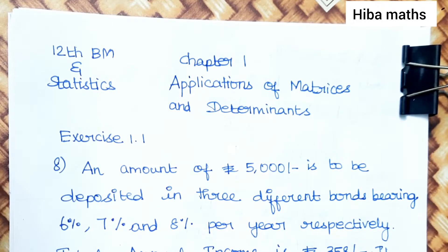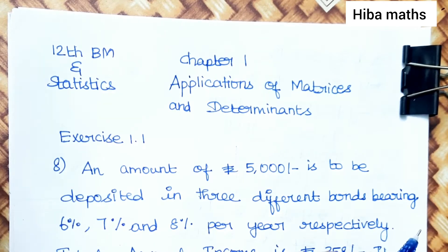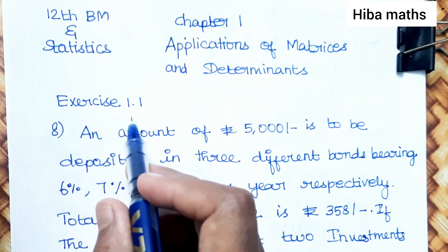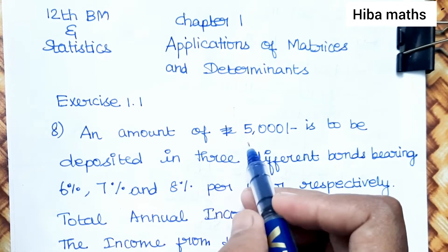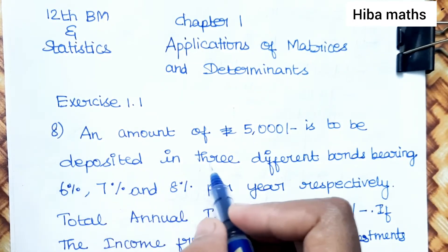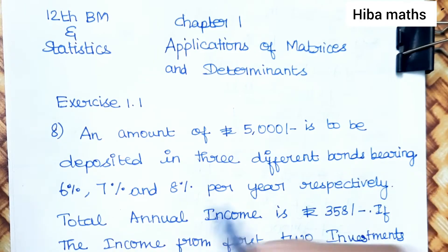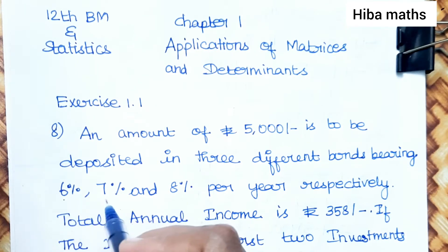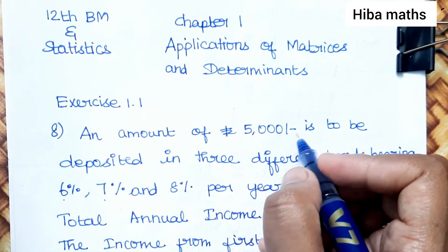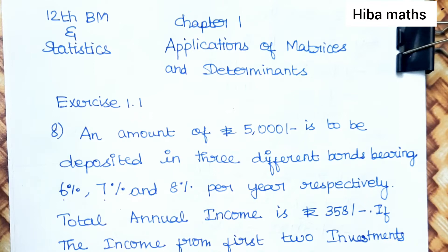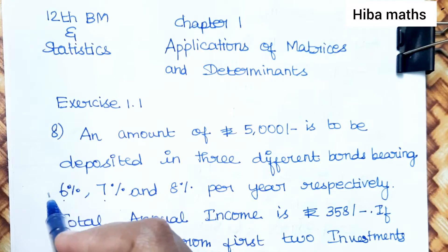Hello students, welcome to Class 12 Business Maths and Statistics, Chapter 1: Applications of Matrices and Determinants. We are solving Exercise 1.1, question 8. An amount of rupees 5,000 is to be deposited in three different bonds bearing 6%, 7%, and 8% interest.